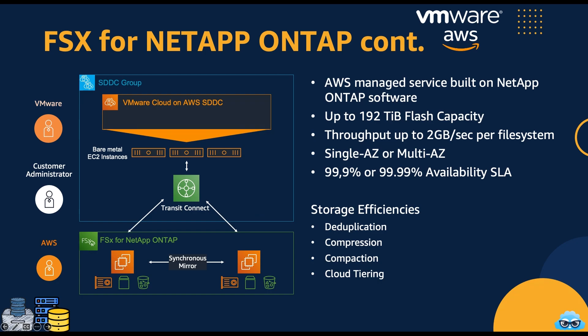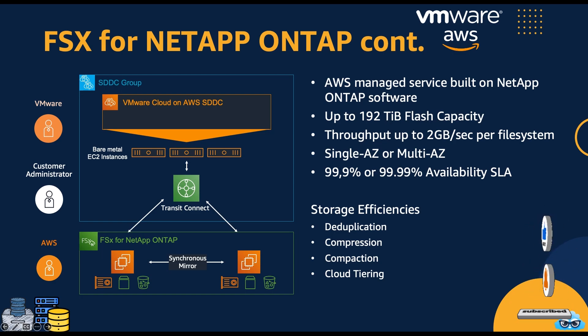Amazon FSx for NetApp OnTap offers several key features. Generous Flash Capacity: with up to 192 terabytes of flash capacity, it ensures ample space for data-intensive workloads. AZ Flexibility: you have the flexibility to deploy it in a single availability zone or span it across multiple AZs, enhancing both performance and availability. Seamless Connectivity: connecting to your VMware Cloud on AWS (VMC) cluster is a breeze through transit gateway connectivity, enabling easy data exchange and management. These features combine to provide a versatile, high-capacity, and highly available storage solution, ideal for a wide array of use cases within VMware Cloud on AWS.